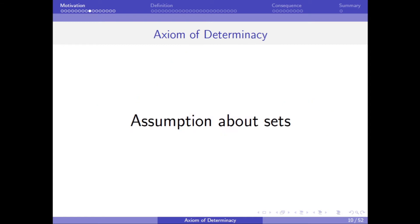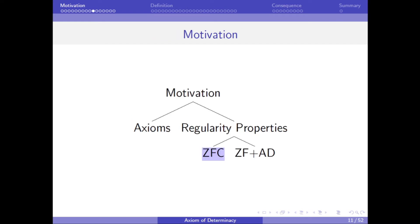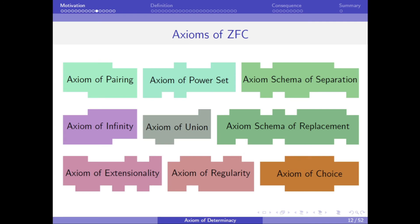In particular, the axiom of determinacy is an assumption about sets. Normally, when we prove properties about sets, we don't assume the axiom of determinacy. Instead, we assume the properties that come from the set theory called ZFC, which has these assumptions.